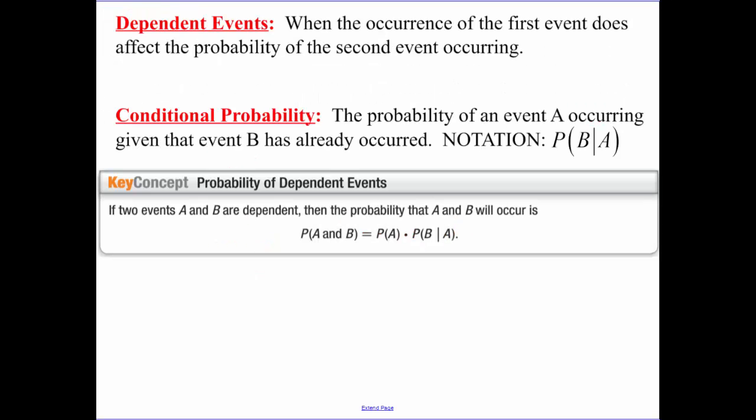Now dependent and conditional probability. Dependent events: when the occurrence of the first does affect the probability of the second occurrence happening. So the probability of an event A occurring given that B has already occurred. Conditional probability is the probability of event A given B, and this is our notation for conditional probability.